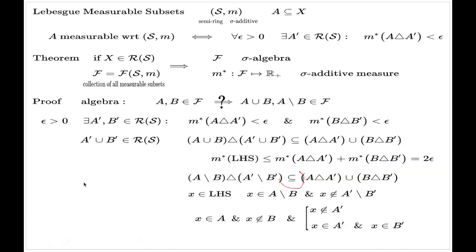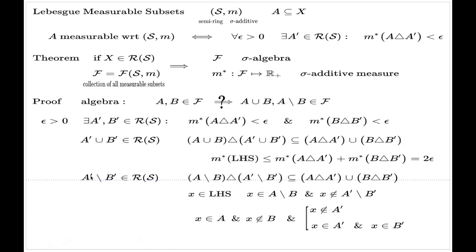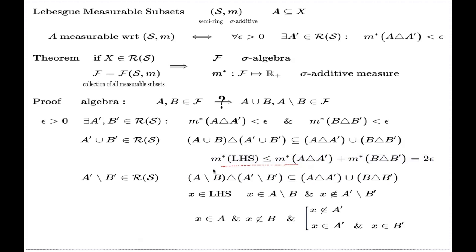Now, if I choose A' difference B' as my element from the minimal enveloping ring, then for the set difference of A and B I have presented an element of the minimal enveloping ring such that the symmetric difference is controlled. Using the same inequality as before, the external measure of the left-hand side is controlled by the individual external measures of the right-hand side, which gives two epsilon. That's why the set difference is Lebesgue measurable.